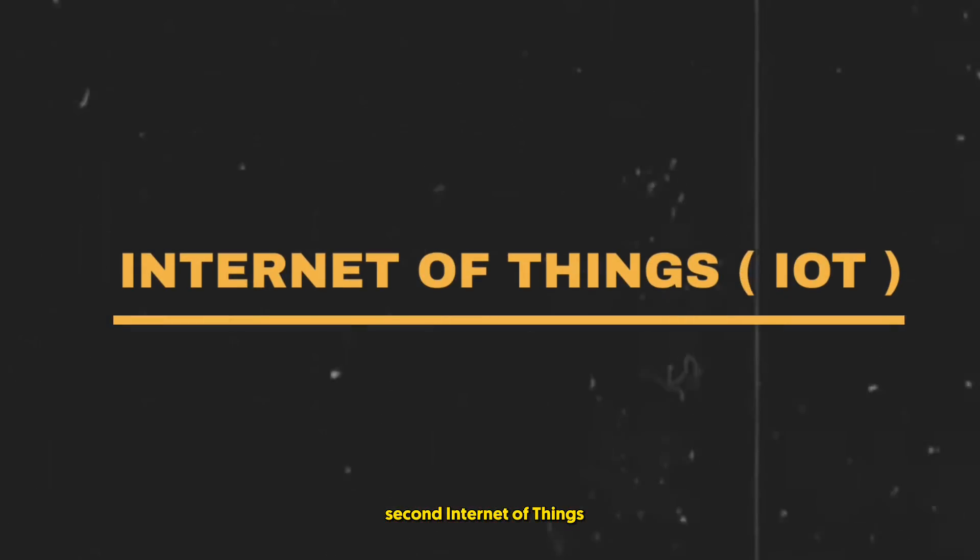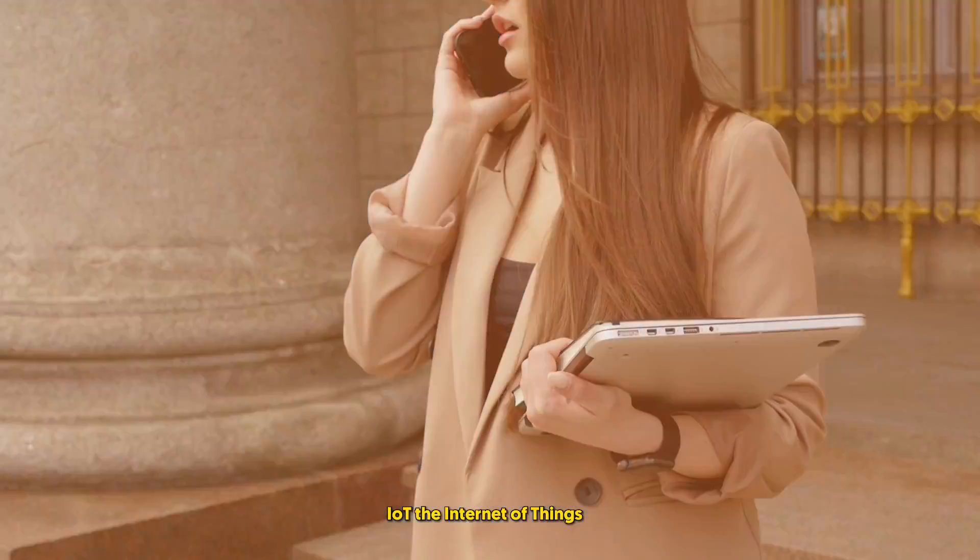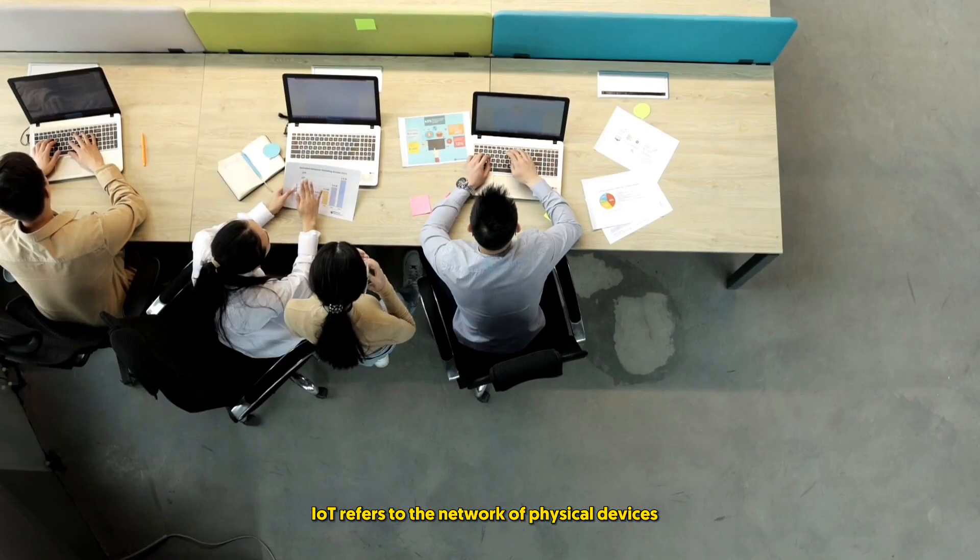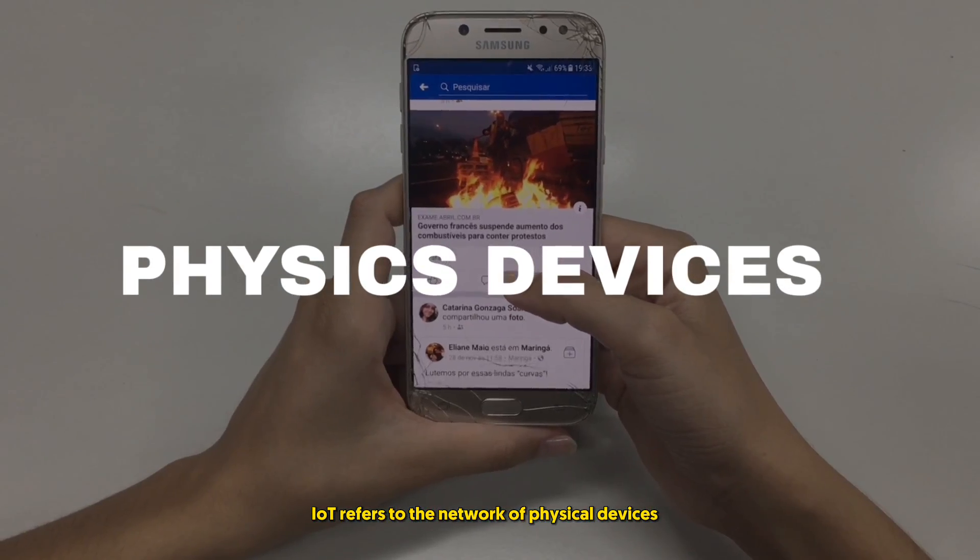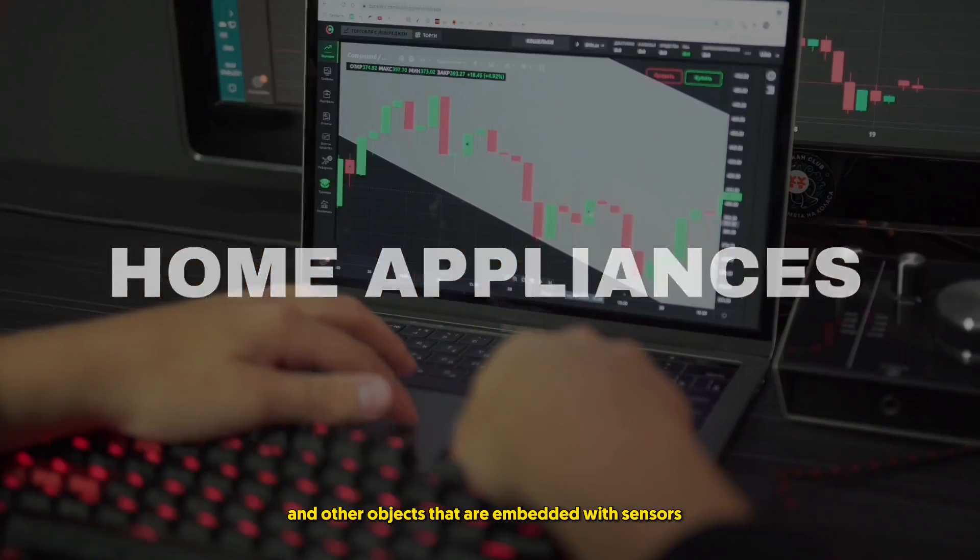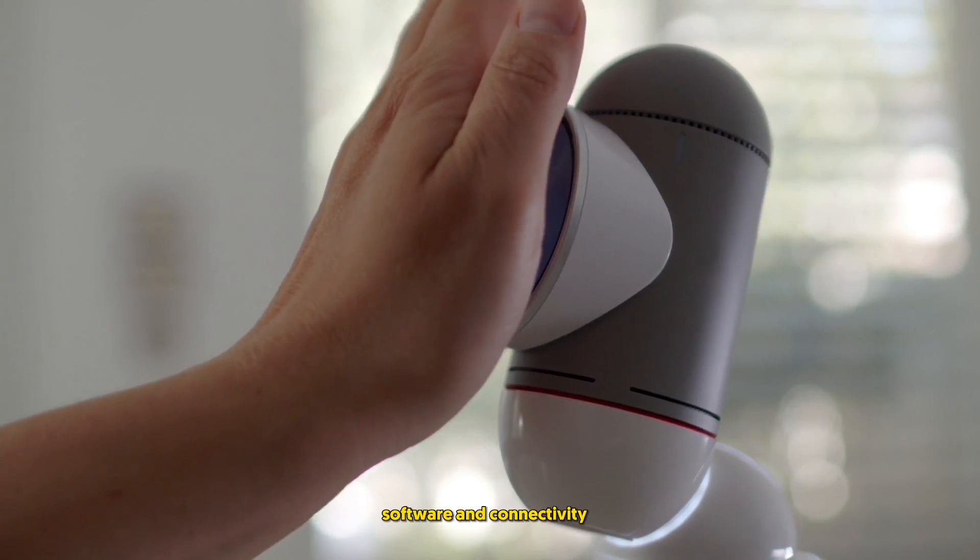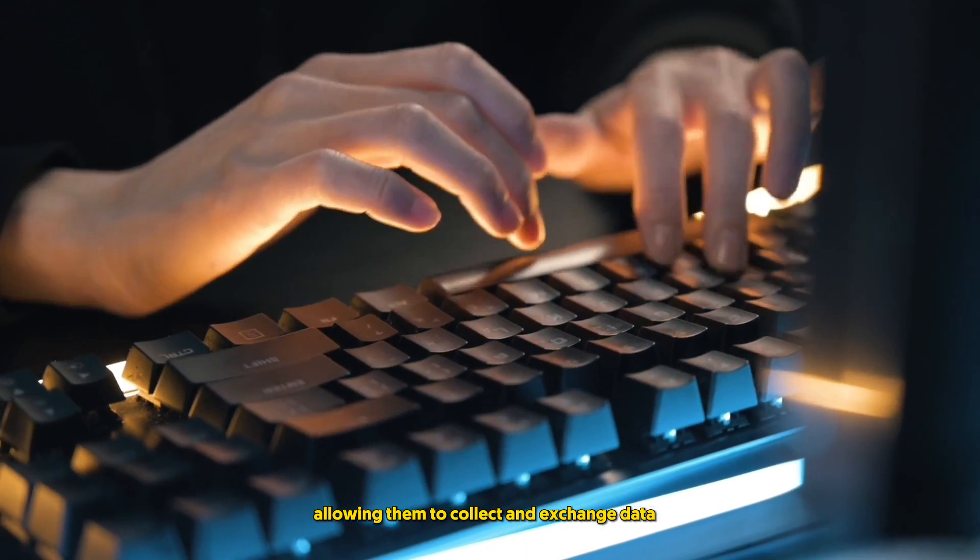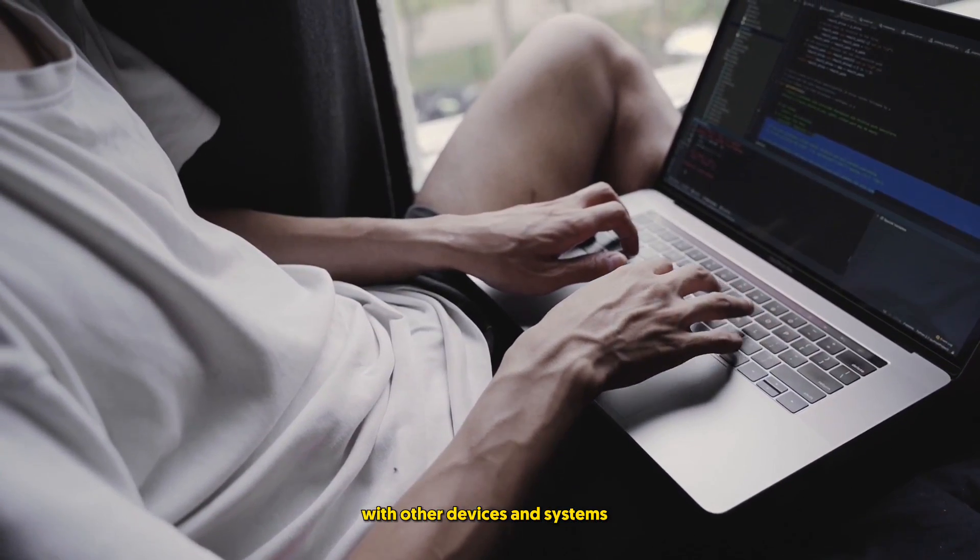Second, Internet of Things IoT. The Internet of Things refers to the network of physical devices, vehicles, home appliances, and other objects that are embedded with sensors, software, and connectivity, allowing them to collect and exchange data with other devices and systems.